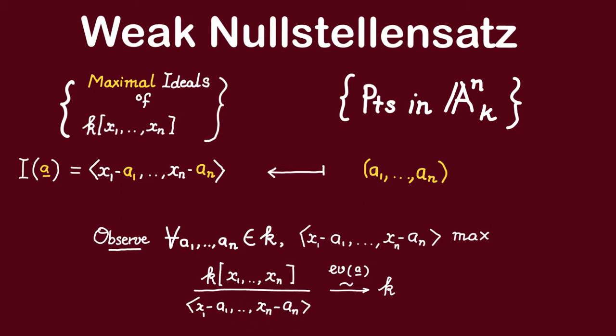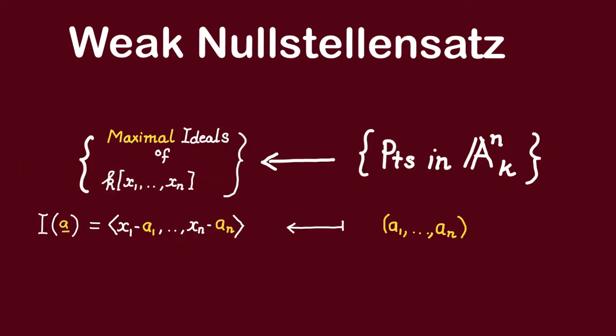We can think of this ideal as the kernel of the evaluation at A map from the polynomial ring to k. Thus we have a way of associating to every point in the affine space a maximal ideal. Now, since we are interested in forming a dictionary, we want to see whether or not we can actually think of maximal ideals as points. So naturally we want to ask, is every maximal ideal the ideal of functions vanishing at some point in the affine space? Is every maximal ideal of this form?